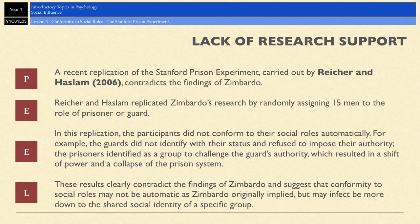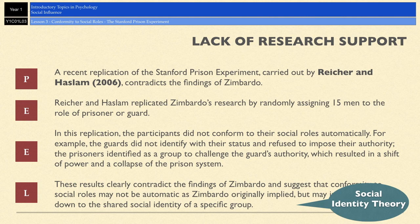In Haslam and Reicher's study, the prisoners identified as a group who were not going to be pushed around or dominated by the guards. They gelled into a cohesive group with a shared identity and actually took control — it wasn't just the title of 'prisoner' that determined their behavior. They formed their own social identity, something Zimbardo didn't account for. This is called social identity theory, suggesting it's not just about the role you're in but also the identity of the group.